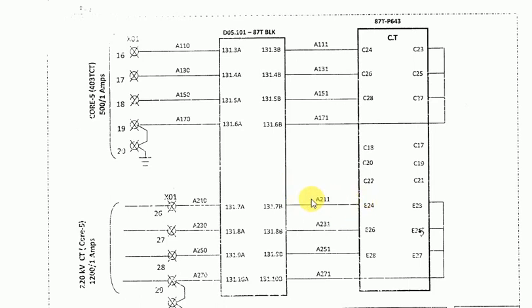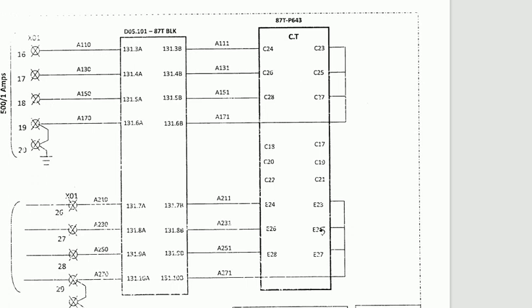Here you can see the scheme drawing for differential protection of a transformer. Since it is a unit protection, a minimum of two CTs is required to calculate the differential current. I am using two CTs here — one is the HV side CT and one is the LV side CT. In the differential relay system configuration, we have to configure this CT arrangement in the relay.